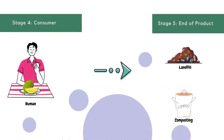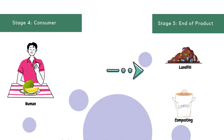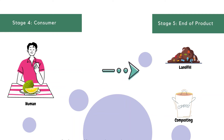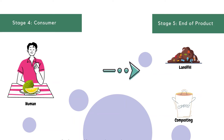The fourth stage is consumer, which refers to us, the people who consume durian. And the last stage is the end of the product. Normally, most of the plastic packaging is single-use plastic, which means it will end up in a landfill. However, durian skin and seeds will end up in a composting area or landfill, but composting is highly depending on the consumer — whether they compost or not.